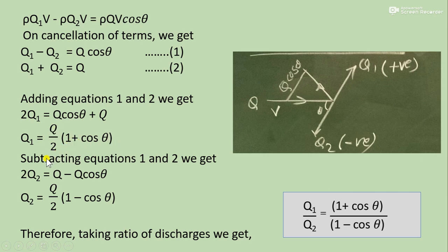In the same way, subtracting equations 1 and 2, we get 2Q2 equals Q minus Q cos θ. So in the form of Q2, that is Q/2(1 - cos θ). So taking ratio of these discharges Q1 and Q2, Q1/Q2 equals (1 + cos θ)/(1 - cos θ).